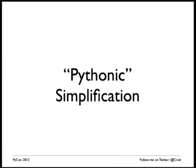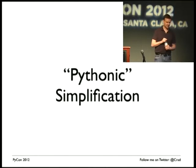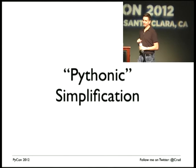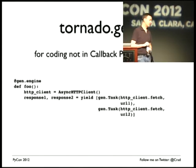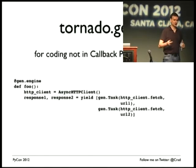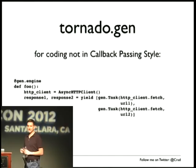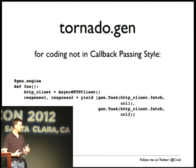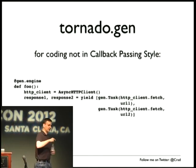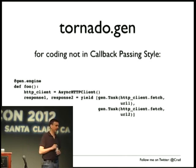TCP server is nice for writing async TCP services, but there's a Pythonic simplification that came out with Tornado 2, which makes it even nicer. Ben Darnell added this about six to eight months ago — a module called Tornado Gen. What Tornado Gen does is allow you to write more Pythonic code and get rid of callback passing style in your async code. You use the @gen.engine decorator, start writing your code, insert yields where you want to yield, and use gen.Task to say: here is the function I want to call, wait until it returns a value back to me, then continue down the road.